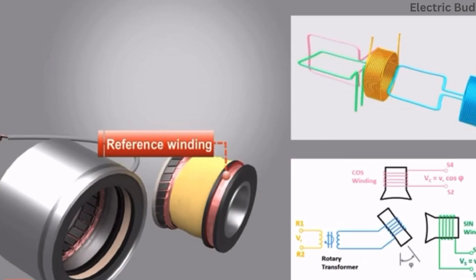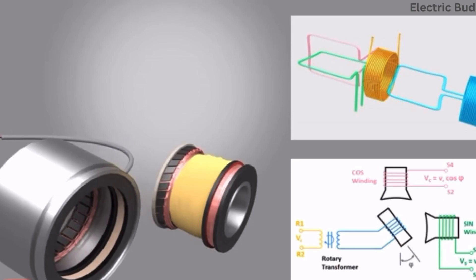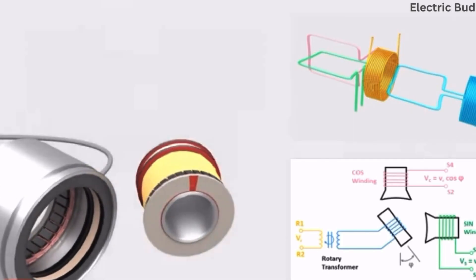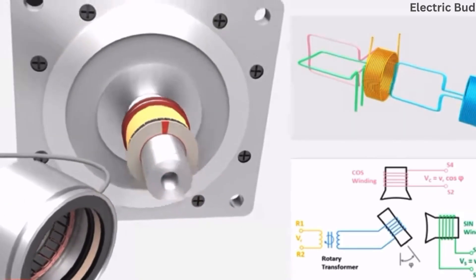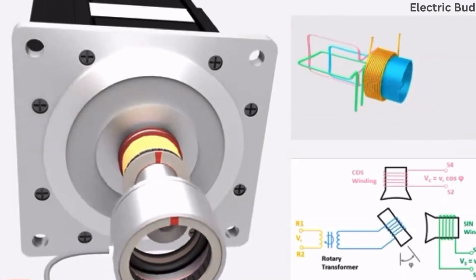measured to determine the angle of the rotor relative to the stator. To get an output signal, we have two secondary stator windings — a so-called sine and a cosine winding — which are displaced angularly to each other by 90 degrees.